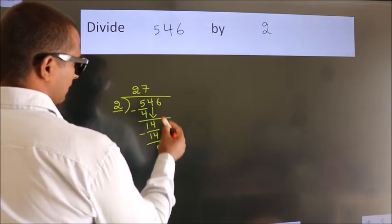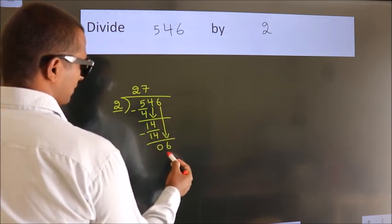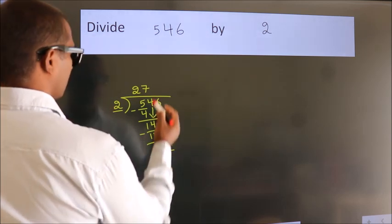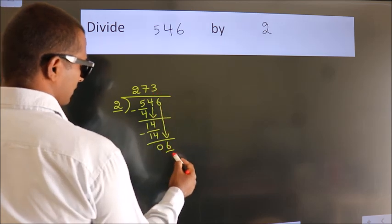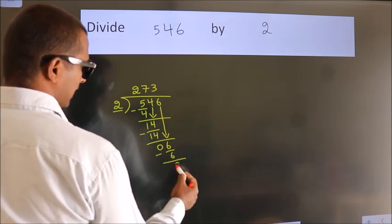After this, bring down the beside number. 6 down. 6. When do we get 6? In 2 table. 2 3s, 6. Now, we subtract. We get 0.